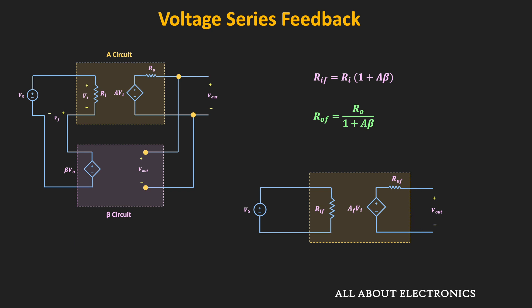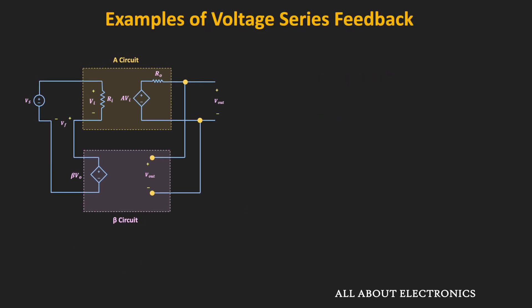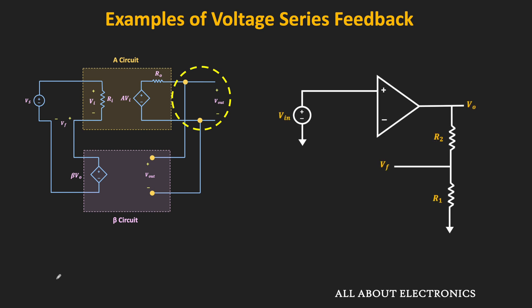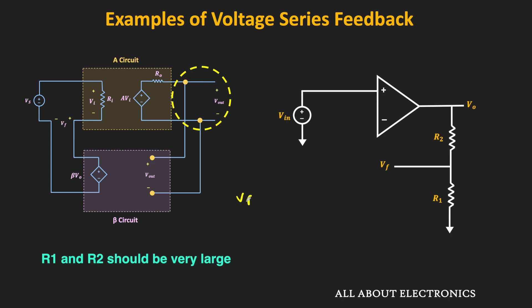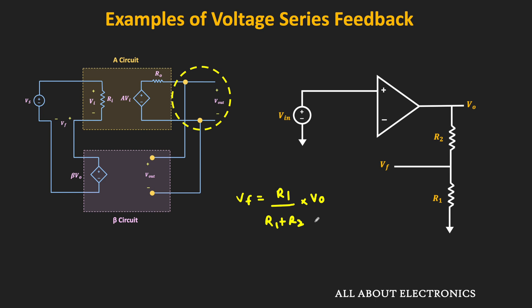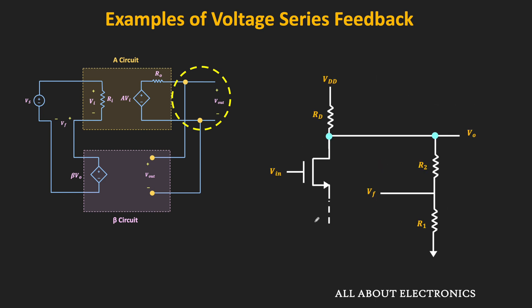Now let us see how the voltage series feedback is implemented in actual circuits. In the voltage series feedback, we have voltage sampling at the output side. In actual circuits, to sample the output voltage, we can use a resistor divider. For example, in an op-amp circuit, the output voltage is sampled using a voltage divider, where the feedback voltage Vf equals R1/(R1 + R2) times Vout. Similarly, in a MOSFET-based amplifier circuit, the output voltage can also be sampled using a voltage divider.